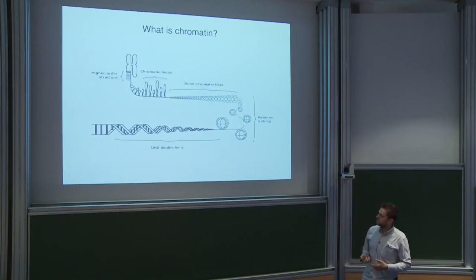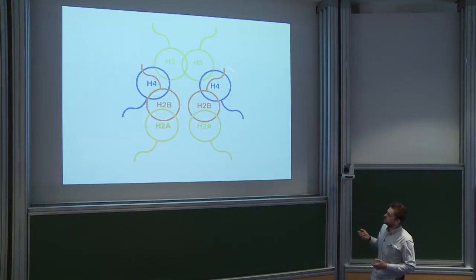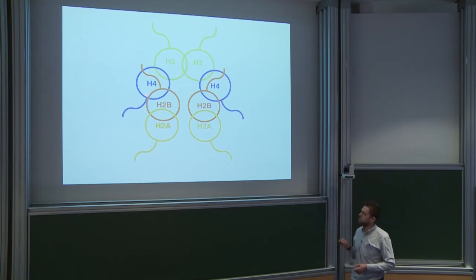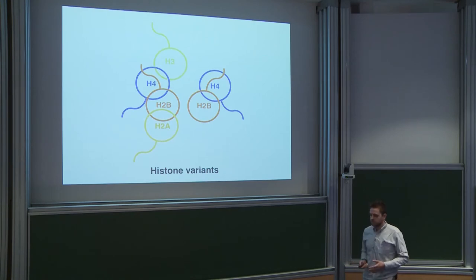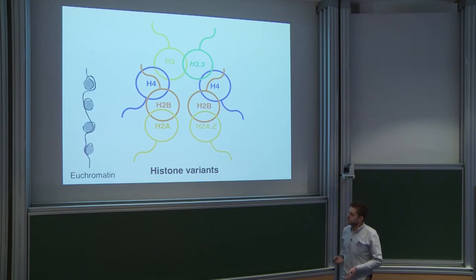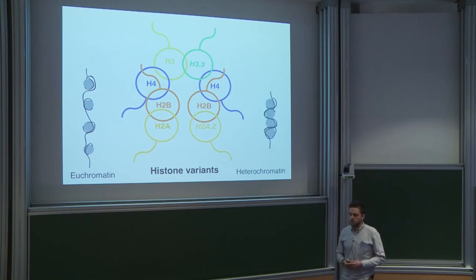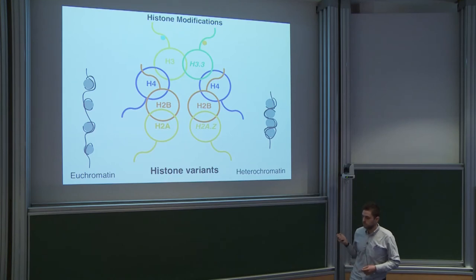Chromatin is the way DNA exists inside the nucleus. Zooming into a nucleosome — a nucleosome is DNA wrapped around a histone octamer composed of eight histones, two each of four different kinds. There are also histone variants; I'll be talking about H3.3 and H2A.Z in particular. These variants can be associated with different chromatin states such as euchromatin (open, active) or heterochromatin (condensed, inactive). Histones also carry modifications on their tails associated with different chromatin states.